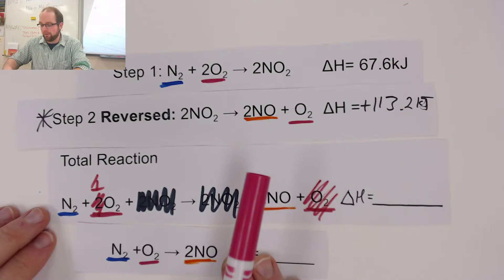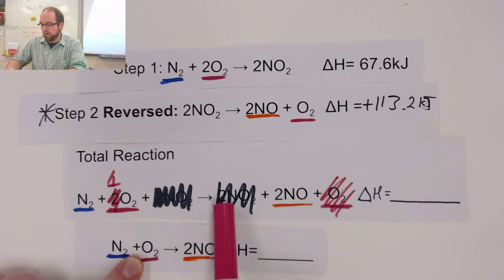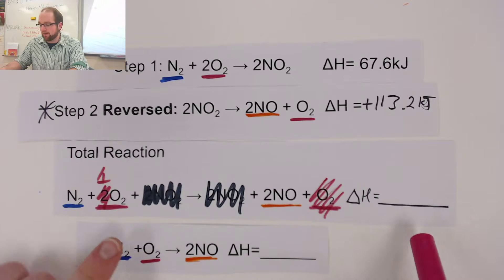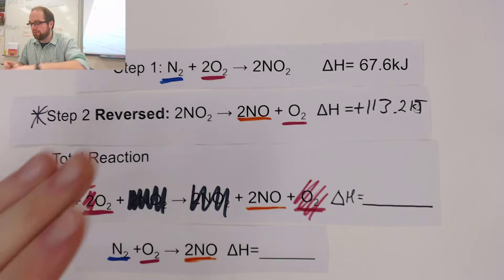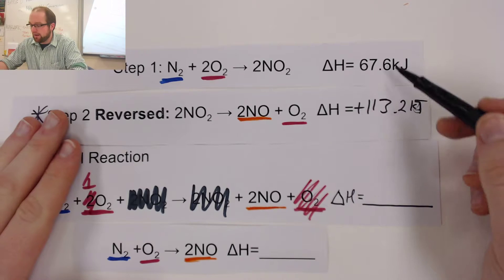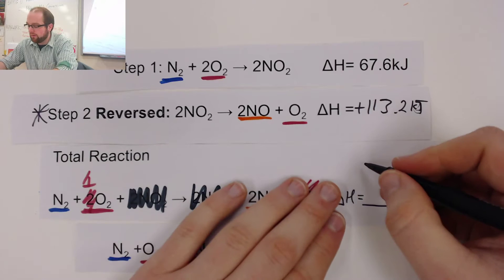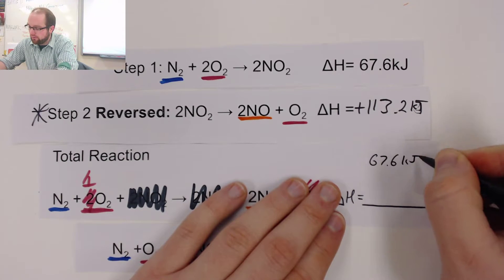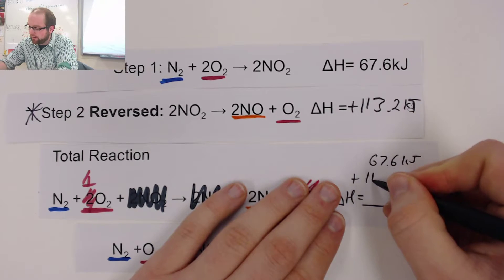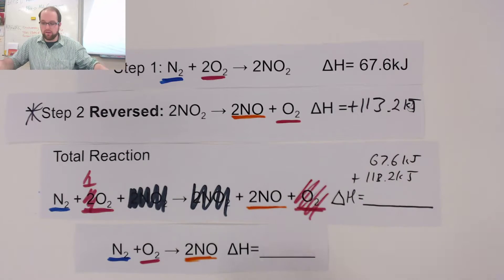And you can see now that we are left with our overall reaction. I'll bring it down here so we can compare. N2, one O2, no dioxides, and one nitrogen monoxide. So, my final question then is to figure out what is my overall delta H? And this is very simply done by adding up the two delta H's of the reactions that we changed. We reversed this second one. So, I'm going to take 67.6 kilojoules plus the positive 113.2 kilojoules for my second reaction.